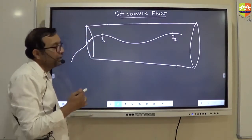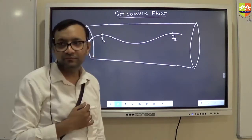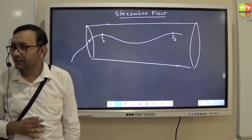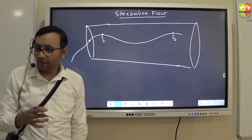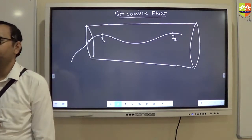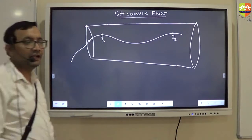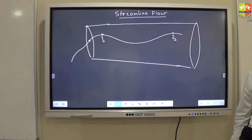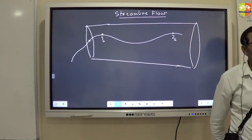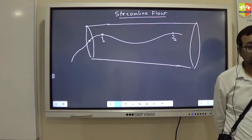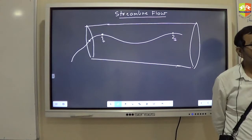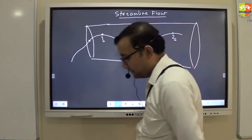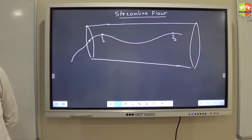Now tell me, how you determine the direction of flow? Direction of flow is along the streamline, yes or no? Right? So please write down tangent to the streamline. Tangent to the streamline is the direction of flow.